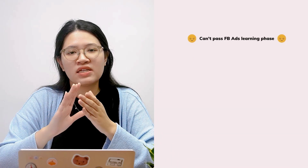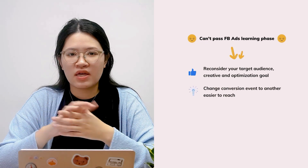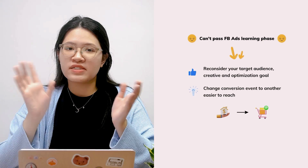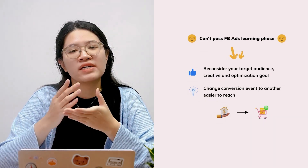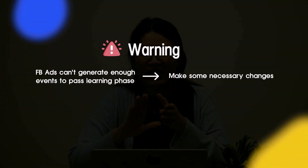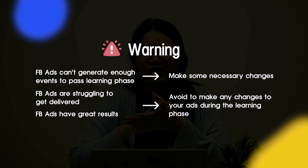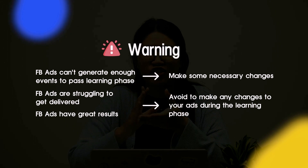If you can't gain the needed 50 optimization events, you may need to reconsider your target audience, creative, and optimization goal. A pro tip: change your conversion event to an easier-to-reach one. For example, if you chose purchase conversion, try something closer like add-to-cart events. However, only make changes if your ads can't generate enough events to pass the learning phase. If your campaign is having great results, leave it as is to avoid affecting the length of the learning phase.